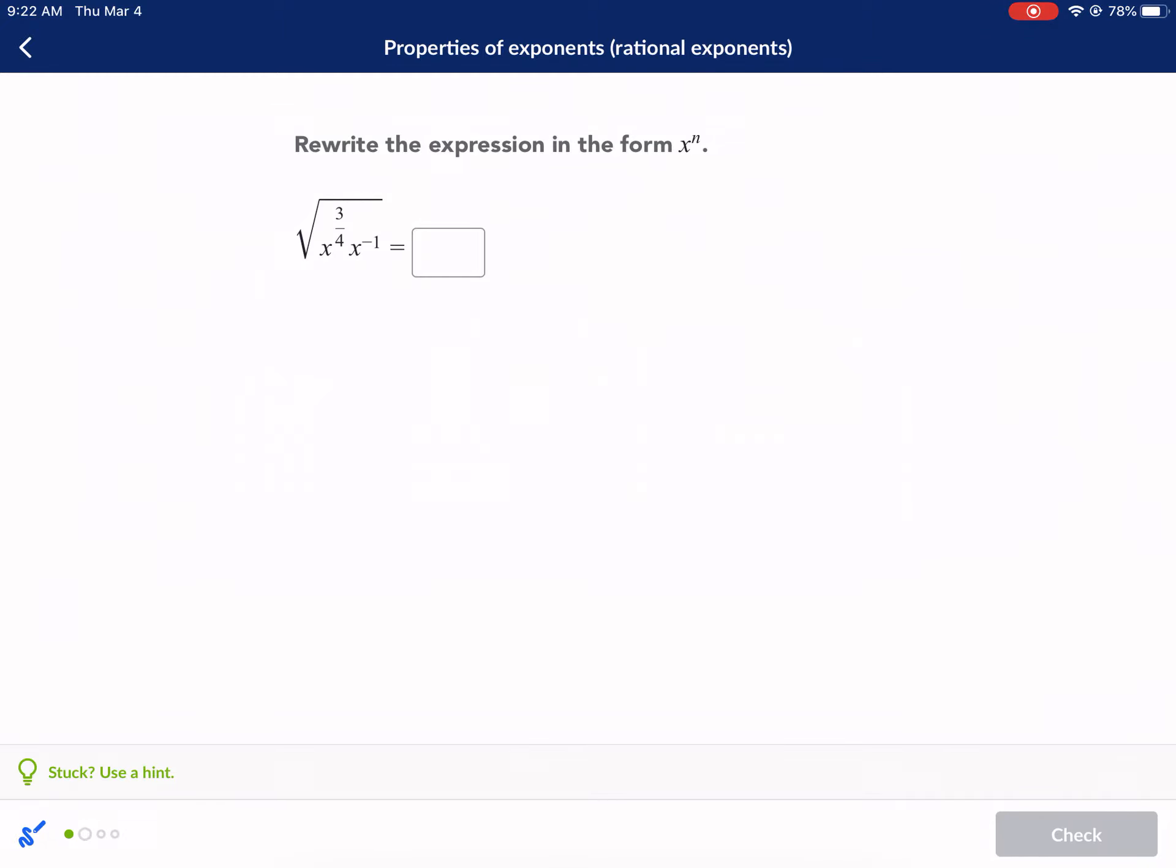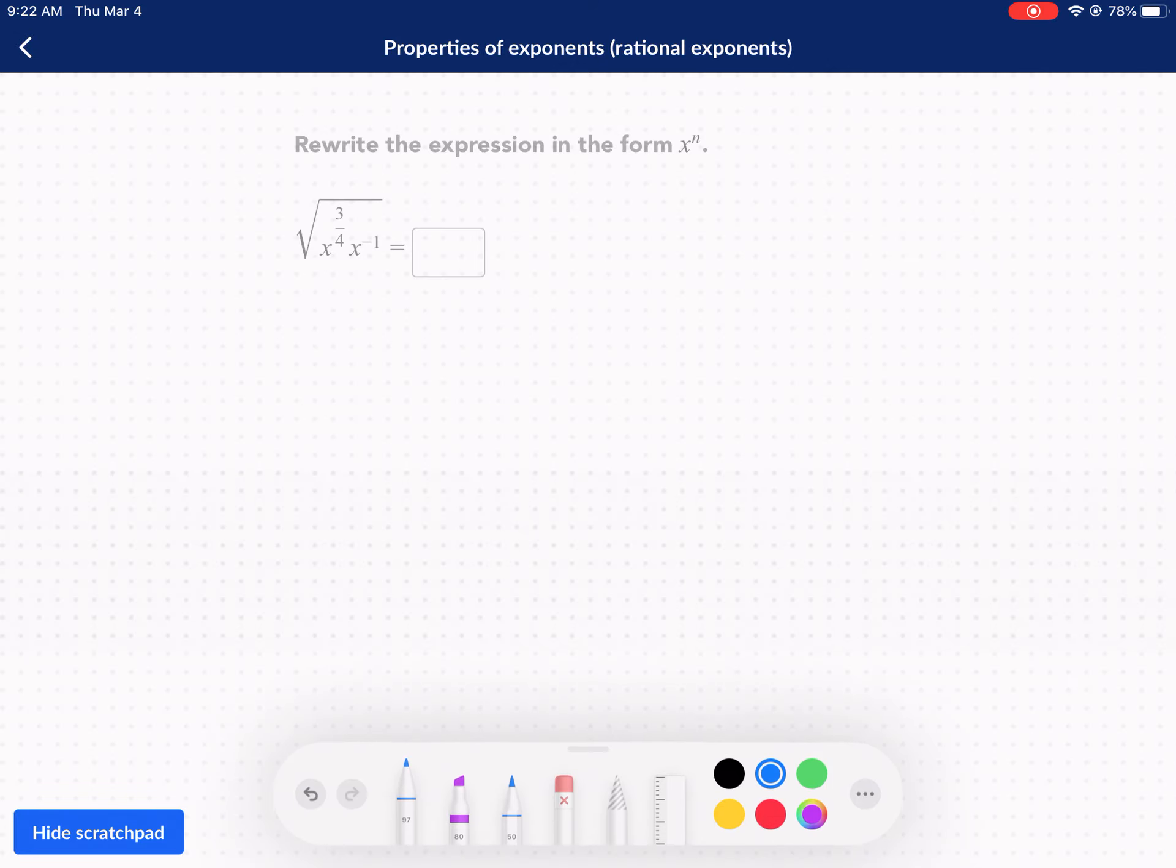Moving on to the next one. We got a doozy here. So the first thing I would do is, this is rather complicated, but this is a good problem. First thing was we have two common bases, so we can combine the exponents. If it's multiplication between the two like bases, then we add exponents. So we're going to have x to the three-fourths, plus negative one. Keep the base the same, add the exponents. That's going to give us negative four over four. So we're going to get negative one over four, and don't forget we have that square root still.